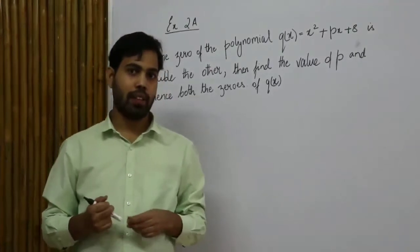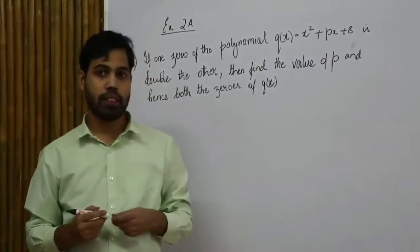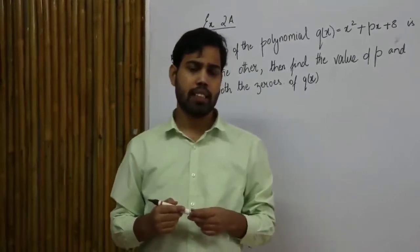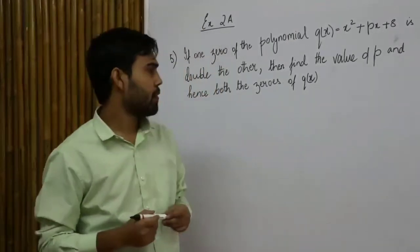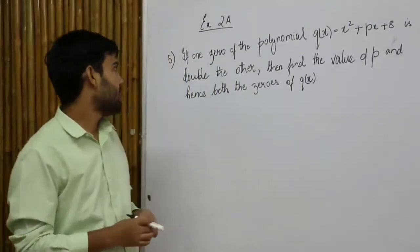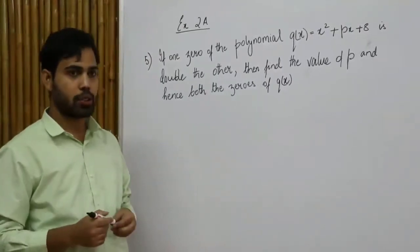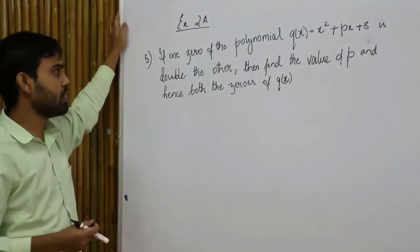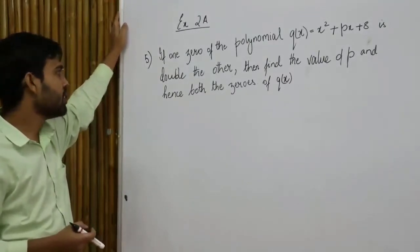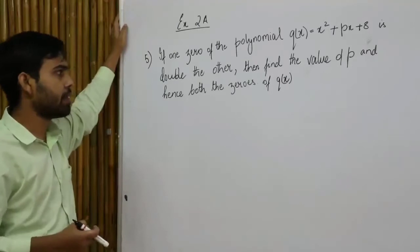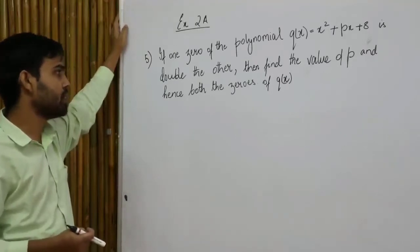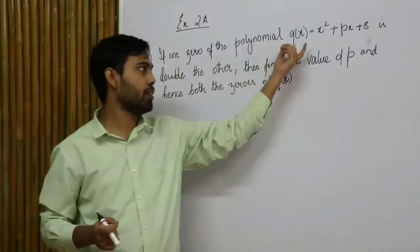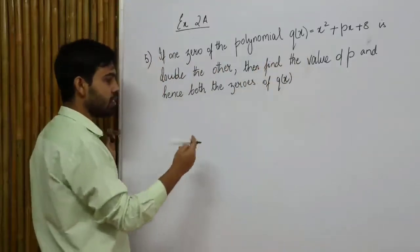In the earlier class we discussed the relation between the coefficient of a polynomial and its zeros. As a continuation of the last class, we are doing question number 5 from exercise 2a. The question says: if one of the zeros of the polynomial is double the other, find the value of p and hence both the zeros of polynomial q(x).